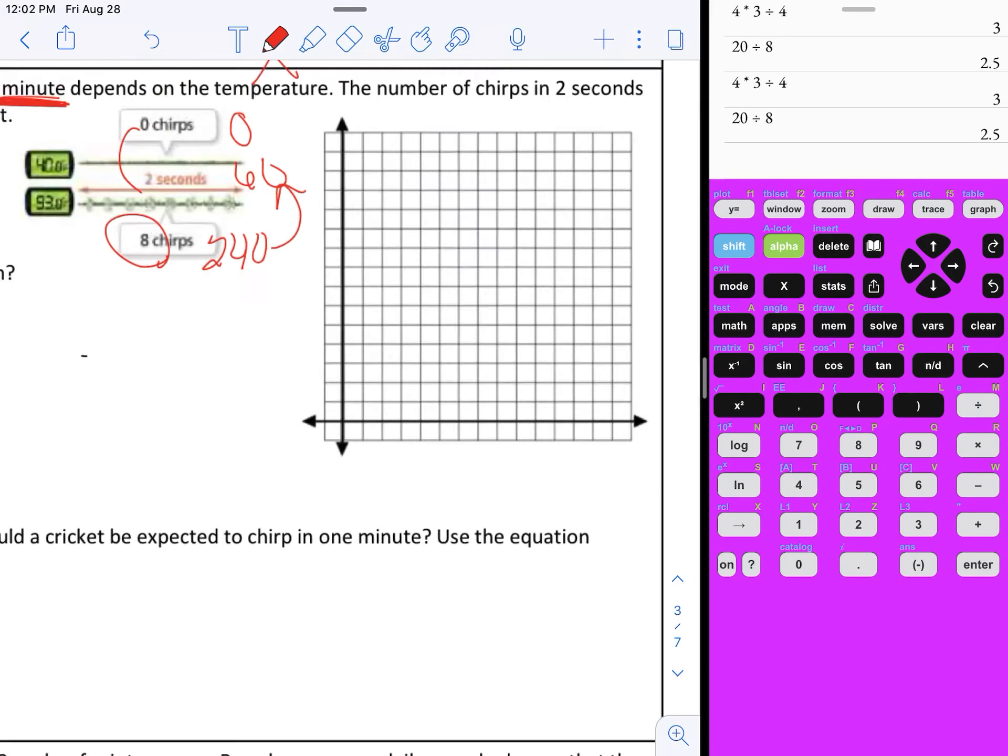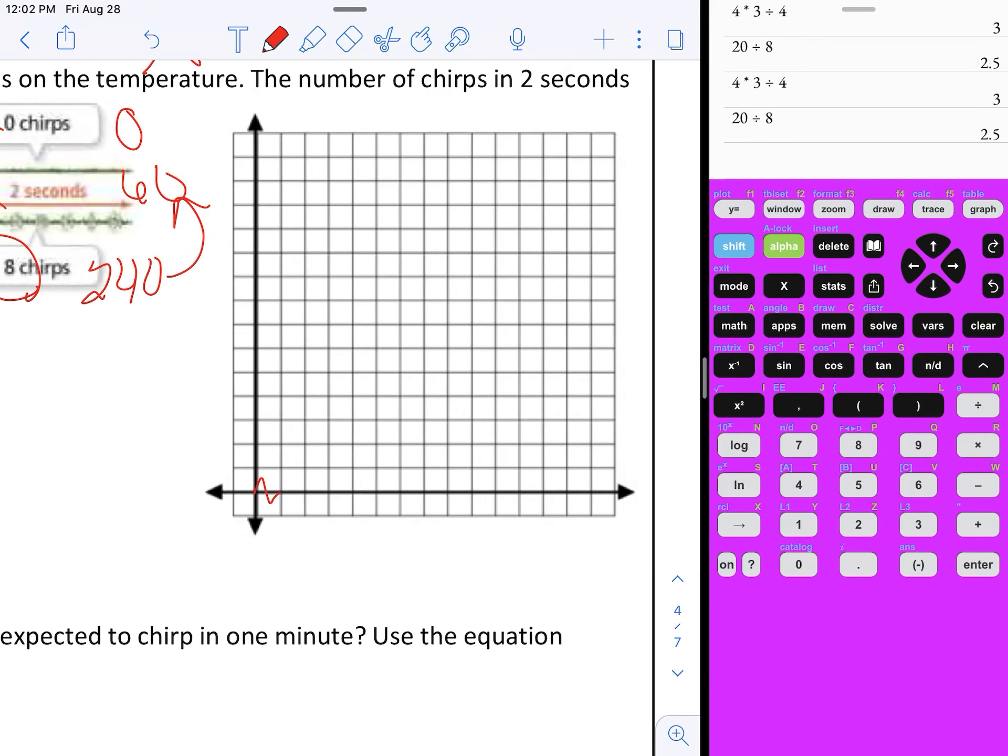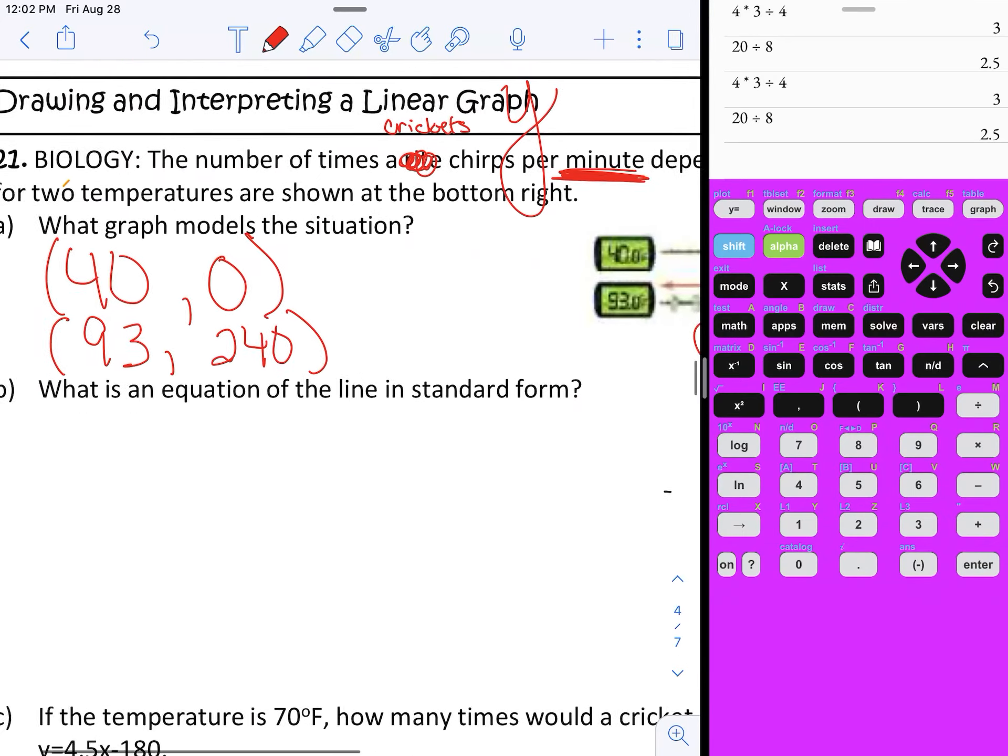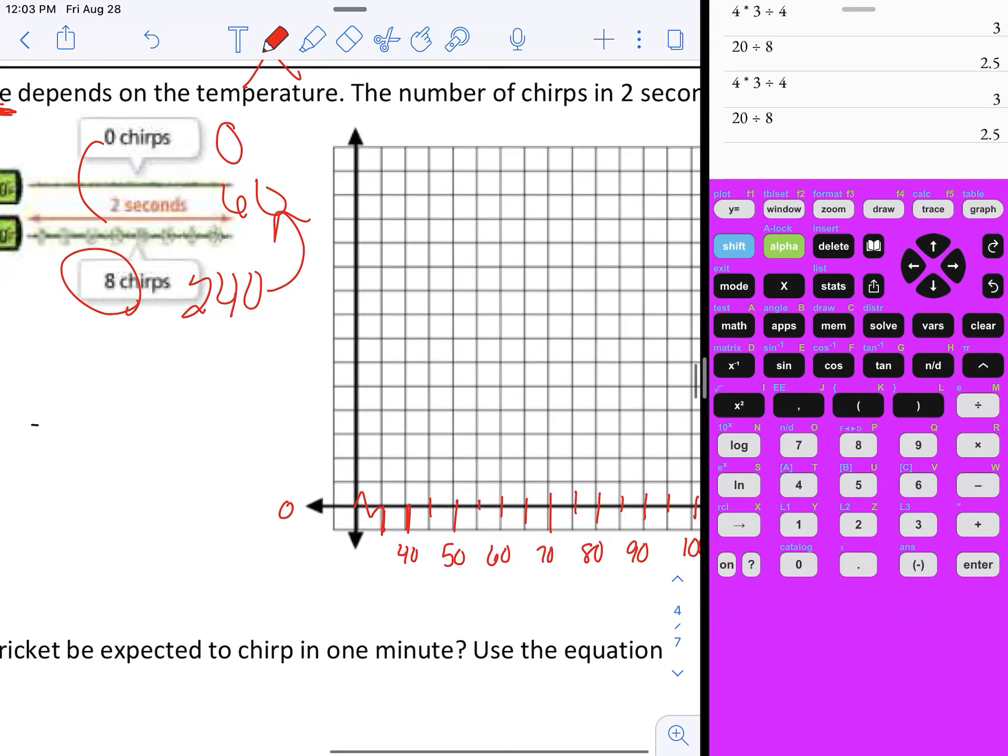Let's graph this. Since I've done this three times I know what to count by. If you need to skip by some you can use this break here. I'm going to let this first be 35, this one be 40, 45, 50, 55, 60, 65, 70, 75, 80, 85, 90, 95, 100. Those are my x values, 40 to 93. For 0 to 240, I'm going to count by 30s: 30, 60, 90, 120, 150, 180, 210, 240. These are my chirps.